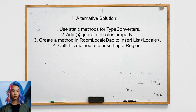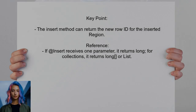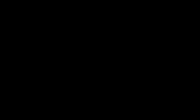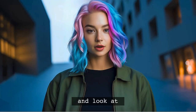This user suggests that type converters in Android Room should only use static methods. They recommend adding the @Ignore annotation to the locales property in the region entity. Instead, create a method in RoomLocale DAO to insert a list of locales after inserting a region. They also mention that the insert method for region can return the inserted ID, which can be useful for inserting related locales.